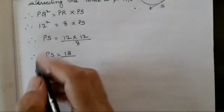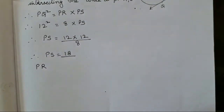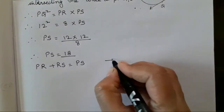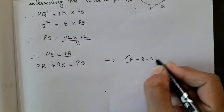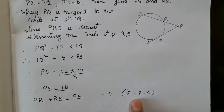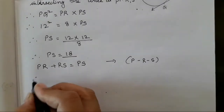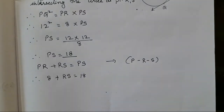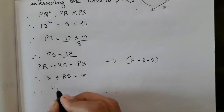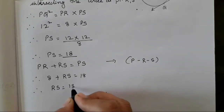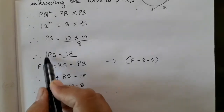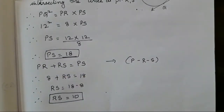Now we have to find the distance RS. PR plus RS is equal to PS, because this is the full line segment. Substitute the values: RS is equal to PS minus PR, that is 18 minus 8. Therefore RS is equal to 10. So we have got both answers: PS = 18 and RS = 10.